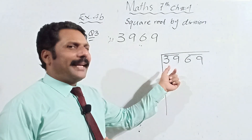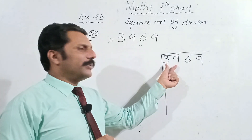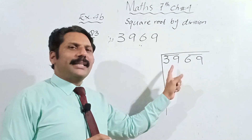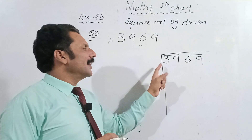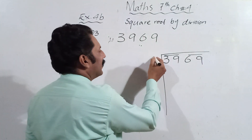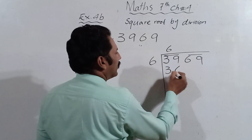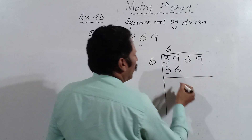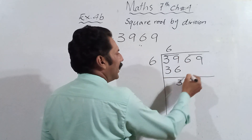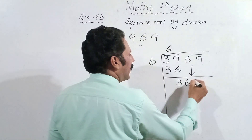Is there any perfect square which is very near to 39? Yes — 36. So we write 6 here and 6 there, and 6 squared is 36. Now we subtract: 39 minus 36 is 3. And we bring down the next pair, 69.